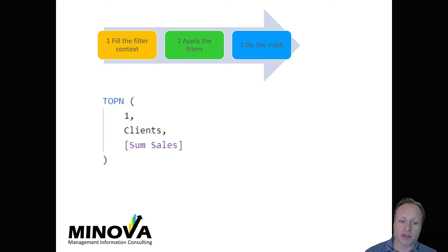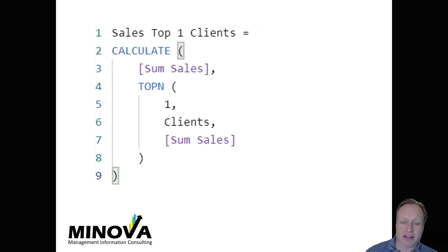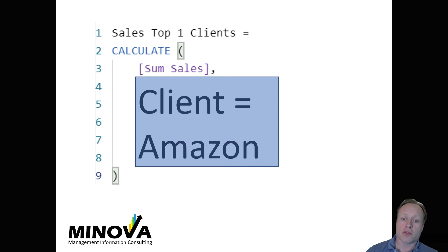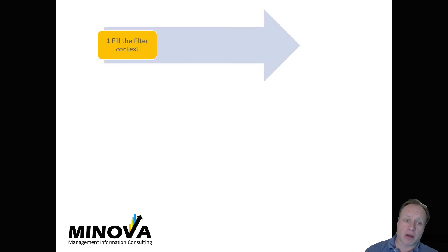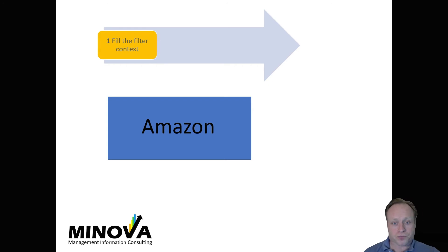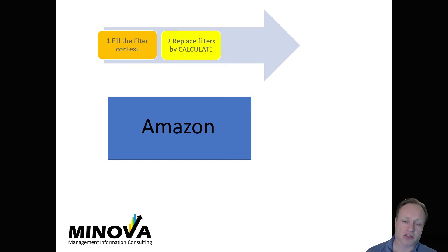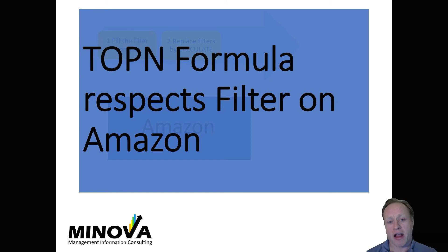So if we're going to look at the best client right now in terms of their sales, well, if there's only one client left, then that one client is going to be the best client. So this is going to be the result of the TopN filter statement. Now we know that that filter statement — the TopN formula — is going to evaluate to client equals Amazon. So in the evaluation of this formula: first, Amazon is added into the initial filter context. CALCULATE is going to replace the initial filter context — in this example, with Amazon. Amazon gets replaced by Amazon, so that doesn't help. The issue is that the TopN formula here respects the filter on Amazon. So how do we resolve that?